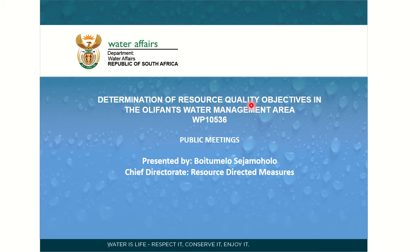The Sustainable Development Goals are targets the world has chosen to change the way we use the world so that it can be sustainable. If the world does not achieve the SDGs, we are in trouble because we are running out of resources quickly. So, if we establish objectives through this process on a fine scale, we can then report on the SDGs and the sustainable management of water resources on large scales.